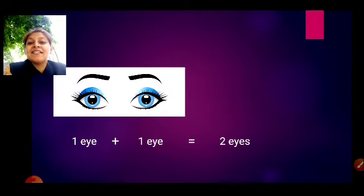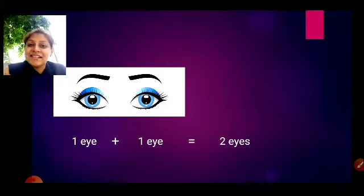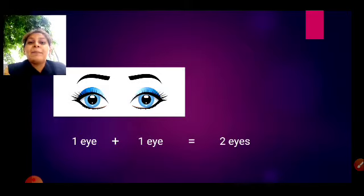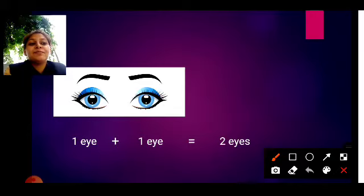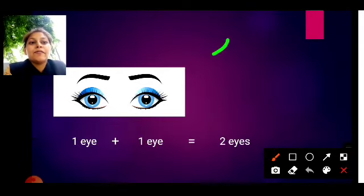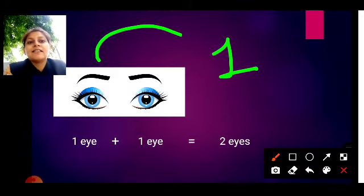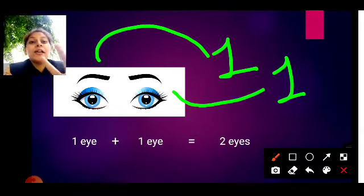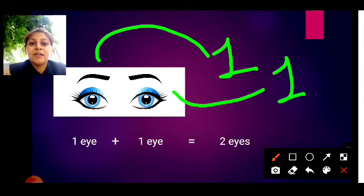Here are the eyes, right? One eye and one another eye, means one and one. One eye plus one eye is equal to two eyes. See, this one is one eye and this one is another eye. One plus one is equal to two. There are one and one — both are the same numbers. One plus one is equal to two.